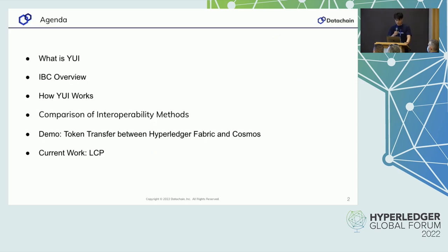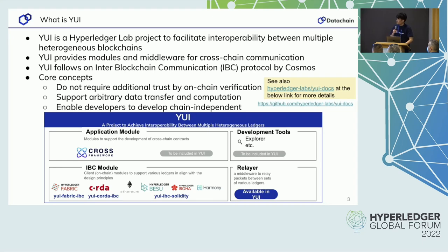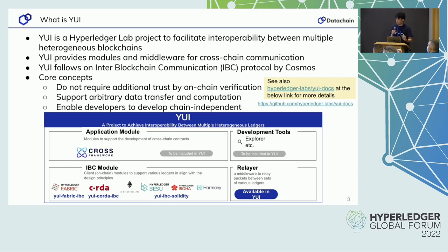The main purpose of this session is to show you what Hyperledger Lab YUI is through a demonstration. First of all, I have to describe what YUI is. As I mentioned earlier, YUI is a Hyperledger Lab project to facilitate interoperability between multiple heterogeneous blockchains. As shown in this figure, YUI consists of several modules and tools; particularly important components are the light client module and the relayer. This will be explained later. YUI also has a cross framework for more complex distributed transactions. We have already released the cross framework on GitHub, but we have not yet integrated it into YUI.